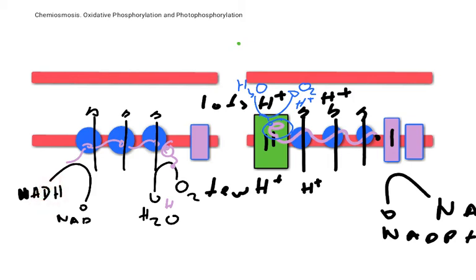To summarize: in oxidative phosphorylation, high energy electrons from NAD go down a chain of carriers and then join with oxygen to produce water, and the energy in that high energy electron is used to move protons from where there are few to where there are lots. In chloroplasts, we take energy from light and use it to move a high energy electron from photosystem 2 to photosystem 1, which joins with NADP to form NADPH. Some of that energy is used to push protons across the membrane, generating a proton gradient in both cases.